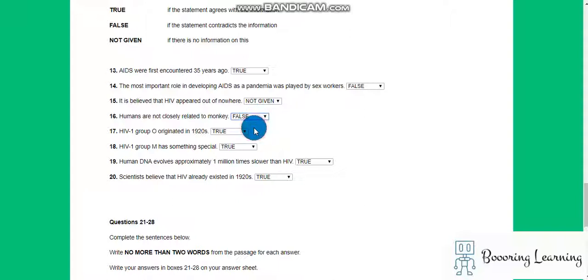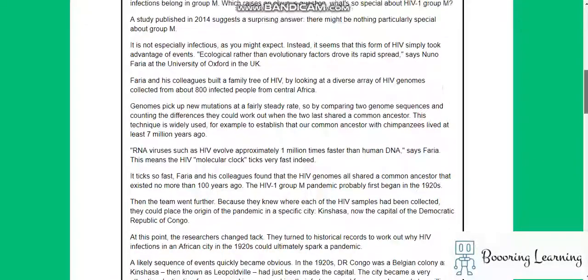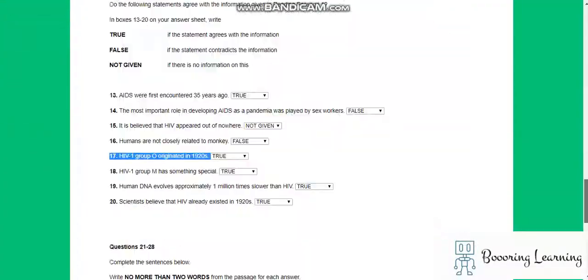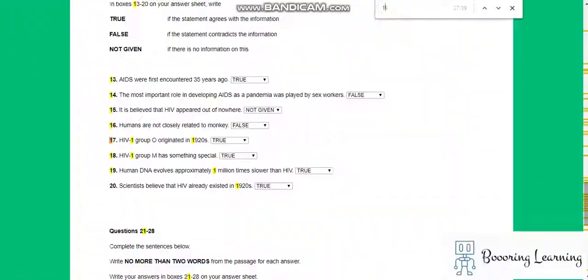It is false, but I'm not sure. Not closely related to monkeys. So, HIV first group originated in 1920s. It is easy to search that. 1920s are the key. Just search it.